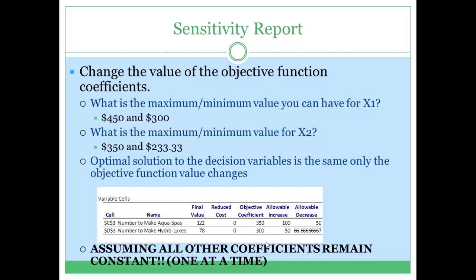If we increase the objective coefficient of aqua spas by 1 to 351, which is in the allowable increase or decrease range, our optimal solution does not change.